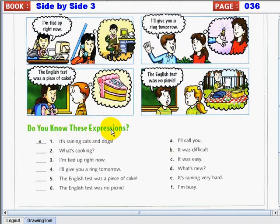Do you know these expressions? You have to choose your answer from letters A to F. Let's start now. Number 1. It's raining cats and dogs. That means it's raining very hard.